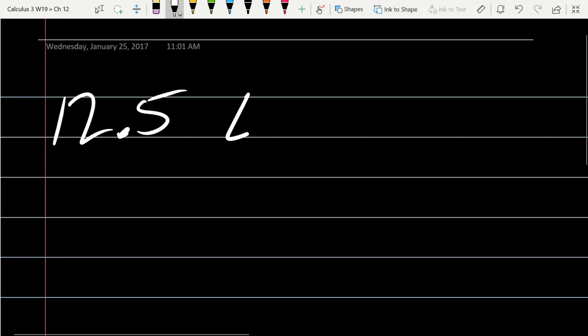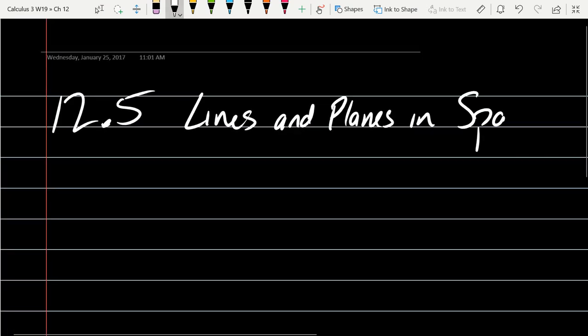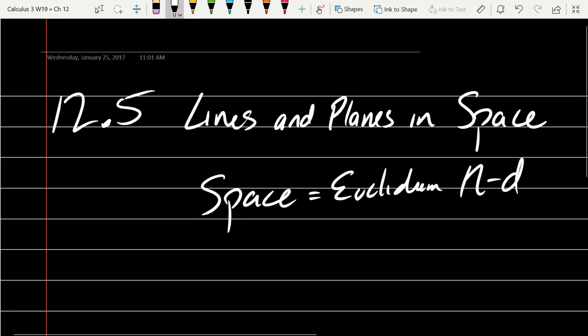This is 12.5, lines and planes in space. So when we see the word space in math, we don't think about rocket ships, but what we really mean is n-dimensional space. When we see the word space, we mean Euclidean space, Euclidean n-dimensional space.